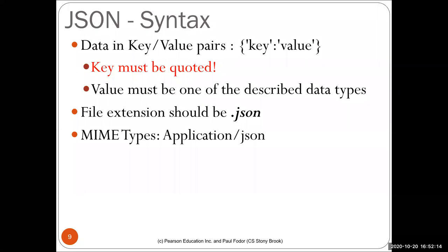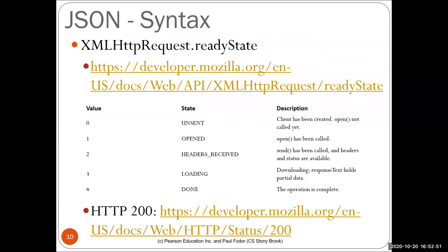The syntax is quite simple. Data in JSON objects are key-value pairs. You have to have a key, which is a string. The key must be quoted and the value may be one of the described data types that I stated before. A file that contains JSON must be with extension, should be with extension .json. The MIME type for that file, used for web applications, is application/json.